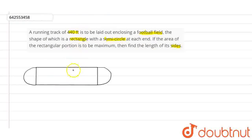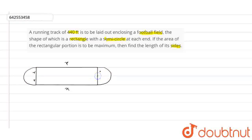Now guys, we have a diagram. Let's say this length is X, and this is also X. If this is the midpoint, we can say that this is the radius R. Similarly, here is the center, so this is radius and this is radius. And if this is a semicircle, we can say that this arc length is πR, and similarly this side is πR.